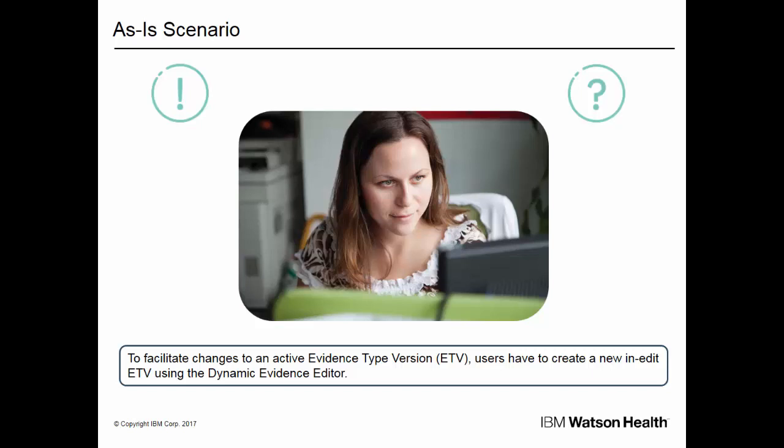Another example of an evidence type that may need correction is descriptions. Corrections can include something as simple as a typo, a rewrite of a description, or where an administrator may want to add a description to a blank description field. Again, the larger need is to make the change to all versions of that published evidence description. Currently, the only way administrators can do this is by creating a new in-edit ETV via the Dynamic Evidence Editor, then make draft changes, and then activate the new version — even though a change to a label has no impact on eligibility or entitlement.